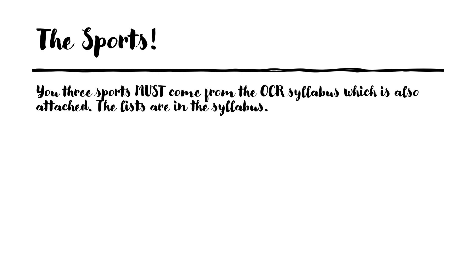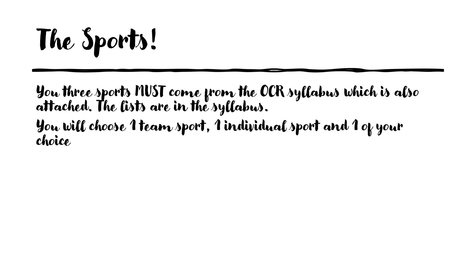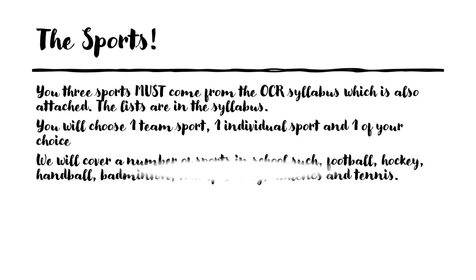This slide is designed to show you the sports you'll be assessed in. The sports must be on the OCR exam board syllabus, which I'll also attach to this area. This list is also in the PE corridor for students to have a look at. You will have to choose one team sport, one individual sport, and one of your choice. We'll cover a number of sports in school such as football, hockey, handball, badminton, trampolining, athletics, and tennis.